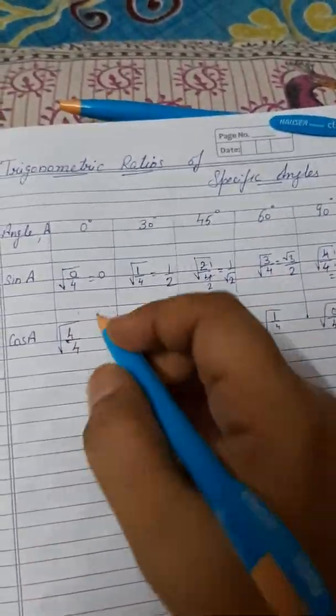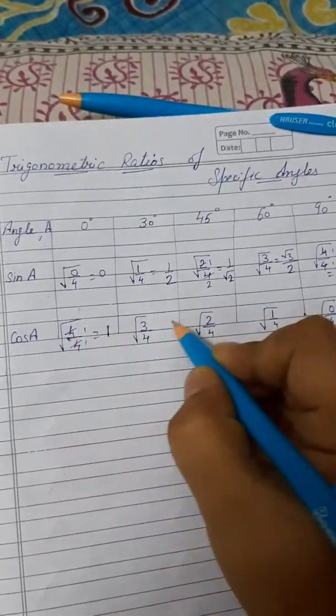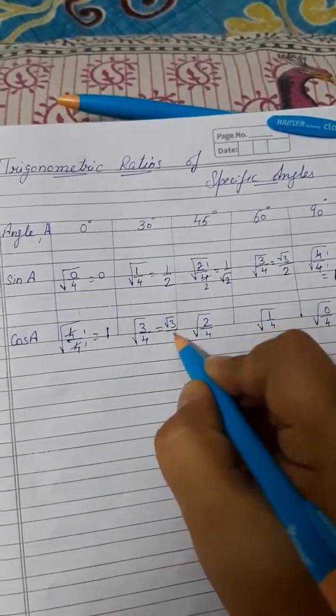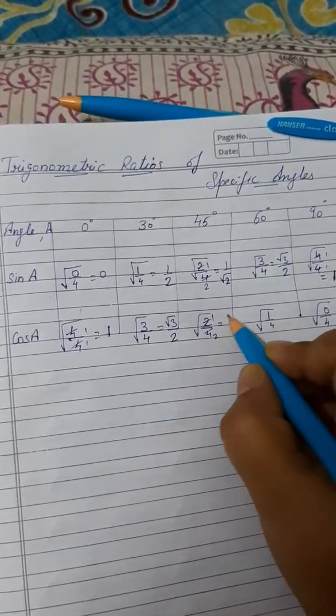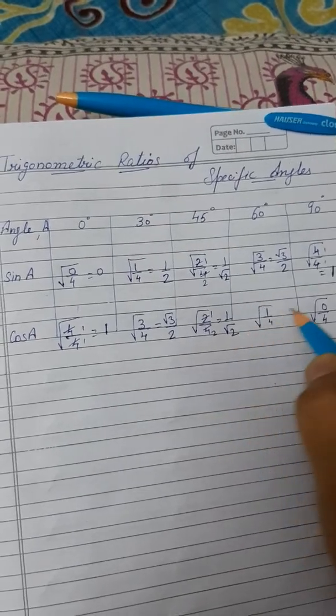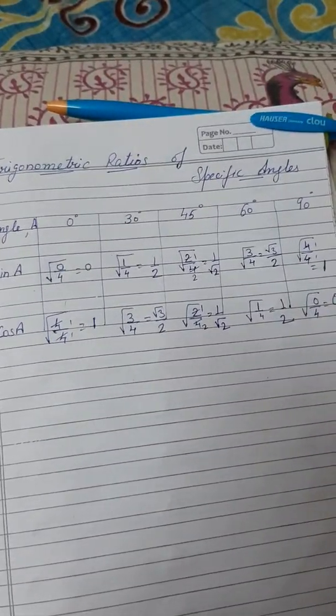Similarly, the same results will apply here. 4 cancelled by 4 becomes 1. This becomes under root 3 by 2. And 2 ones are 2, 2 twos are 4, so this becomes 1 by under root 2. And this 1 by 2. And the last one becomes 0.